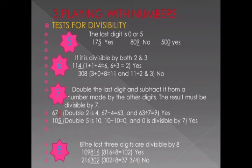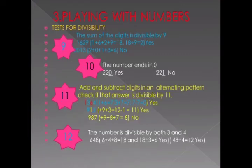Divisibility of 9: same rule as 3 — you add all the digits of the number. If the sum of the digits is divisible by 9, then the whole number is also divisible by 9. The rule for 9 is exactly the same as for 3: add the digits, and if the answer is divisible by 9, the whole number is divisible by 9. For divisibility of 10, it is very easy.